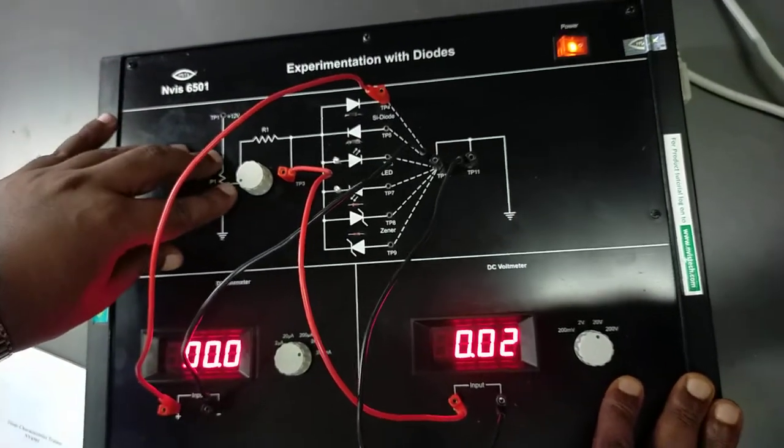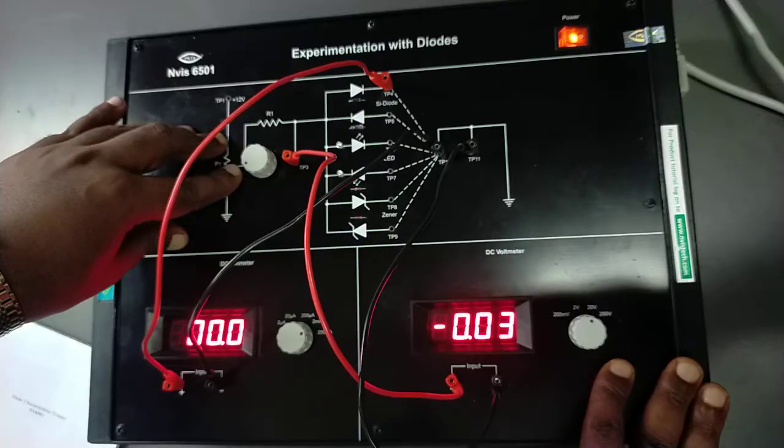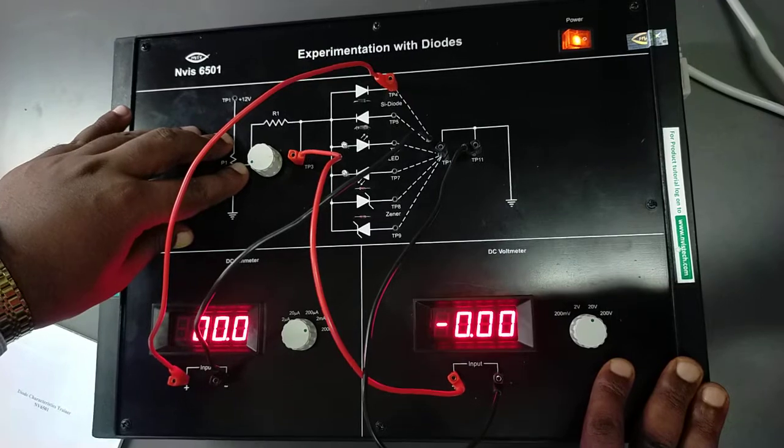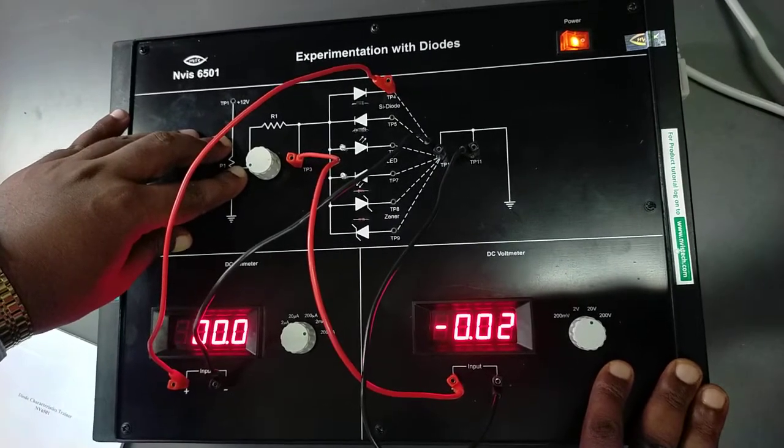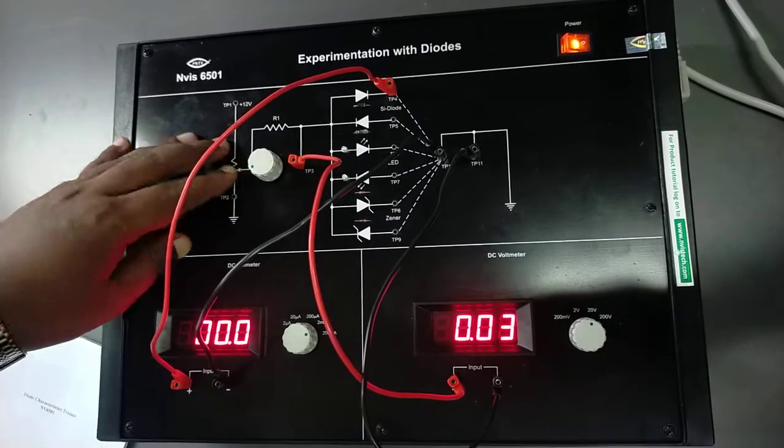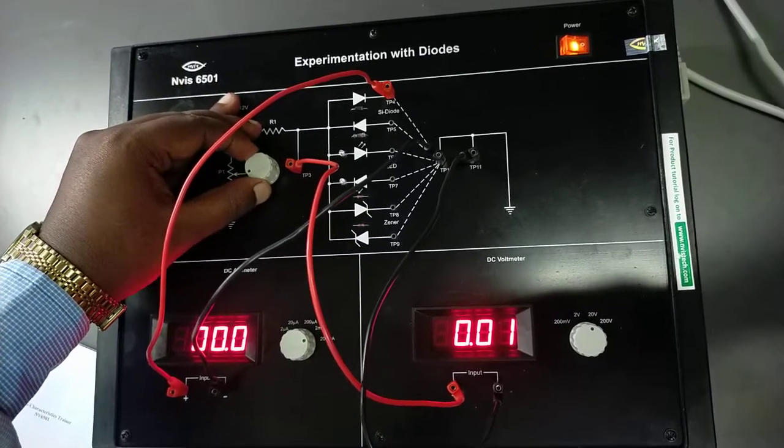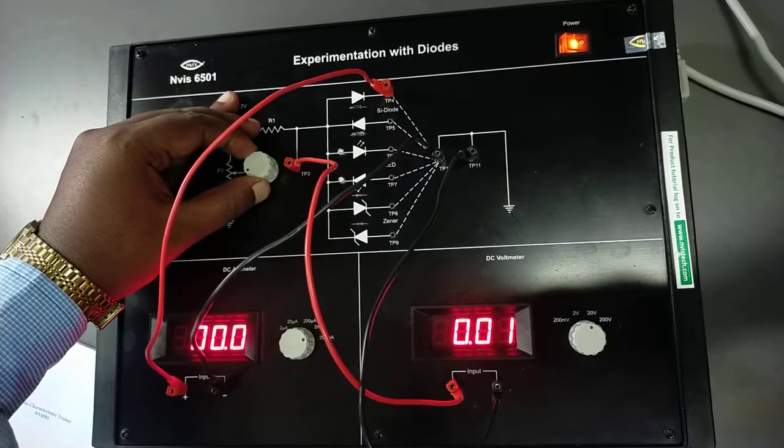So here we have a potentiometer knob by which we can control the voltage across the silicon diode. So let's start to increase the voltage across the silicon diode.